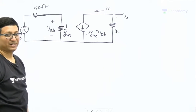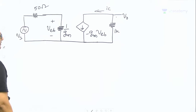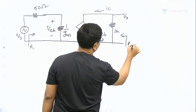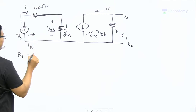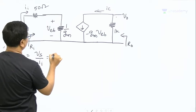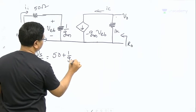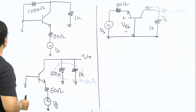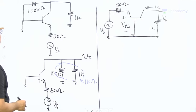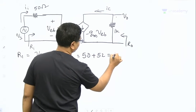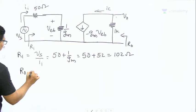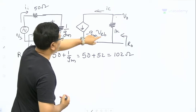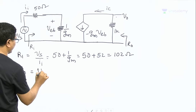Now we can find input resistance, output resistance, and gain. The input resistance, looking from the source, is V_s divided by I_i, which equals 50 plus 1/g_m. Since g_m is 1/52, then 1/g_m is 52 ohms, so input resistance is 102 ohms — as expected, common base amplifier input impedance is small. For output resistance, setting V_s to zero makes V_EB zero, opening the current source; the resistance looking into the output terminals equals 1k ohm.